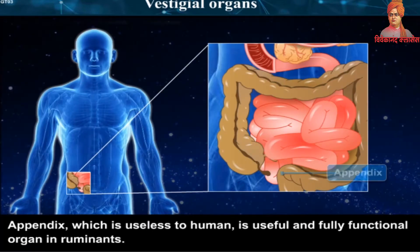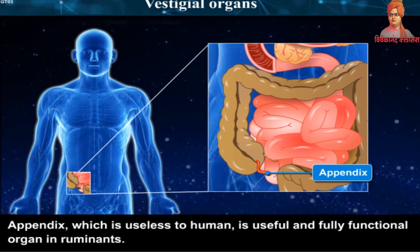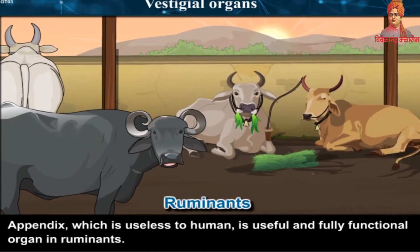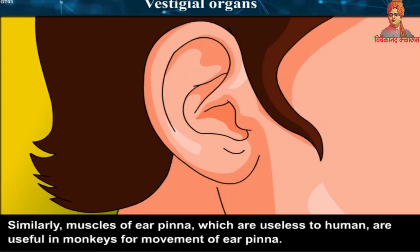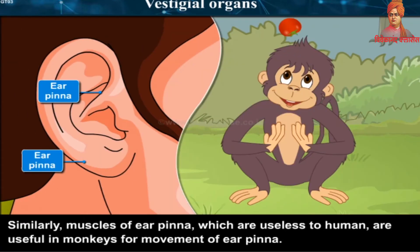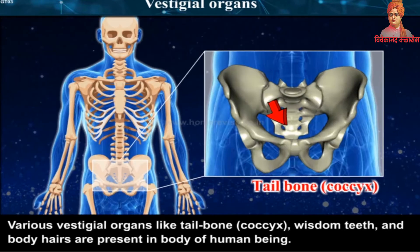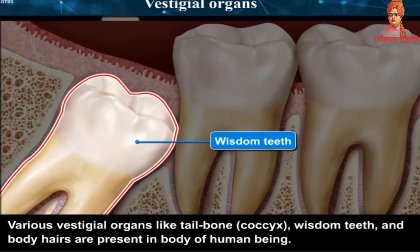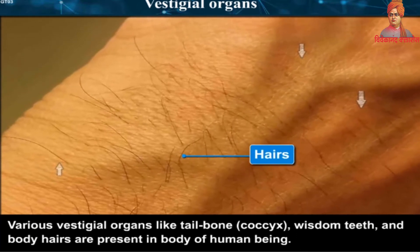The appendix, which is useless to humans, is a fully functional organ in ruminants. Similarly, muscles of the ear pinna, which are useless to humans, are useful in monkeys for movement of the ear pinna. Various vestigial organs like the tailbone, wisdom teeth, and body hairs are present in the human body.